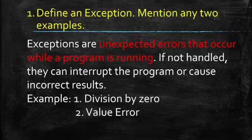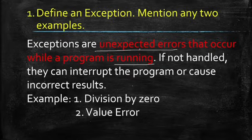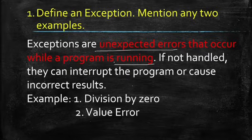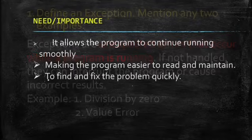First, what is an exception? Mention any two examples. If they're asking about exception, you have to mention here - these are the important keywords I highlighted. Exceptions are unexpected errors that occur while a program is running. So here you have to mention 'unexpected error.' When will the unexpected error occur? During runtime. You have to mention that. So what will happen if you don't handle it? It will interrupt the program or cause incorrect results. If you don't remember this also, at least write this statement. Then provide any one example: division by zero or value error. Clear? So this is the explanation you have to mention.